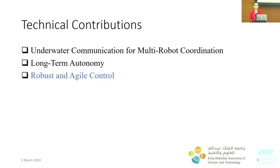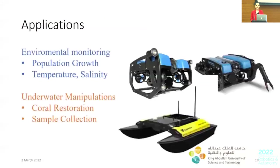We have three technical contributions with the Red Sea Research Center. The first is underwater communication for multi-robot coordination. The second is long-term autonomy, covering robot navigation and battery life. The third, which I will concentrate on today, is robust and agile control. The main applications include environmental monitoring — such as population growth of organisms — and environmental parameter detection such as temperature, salinity, and depth.